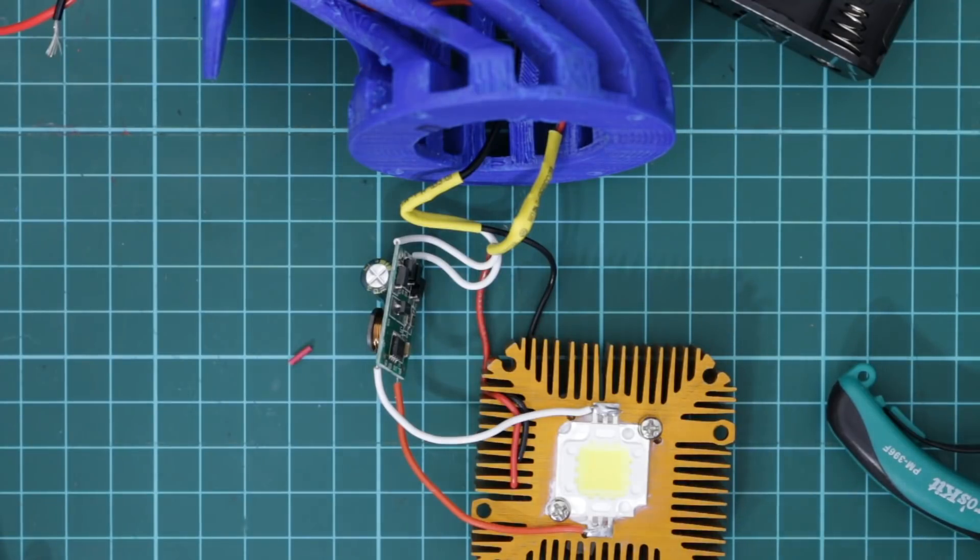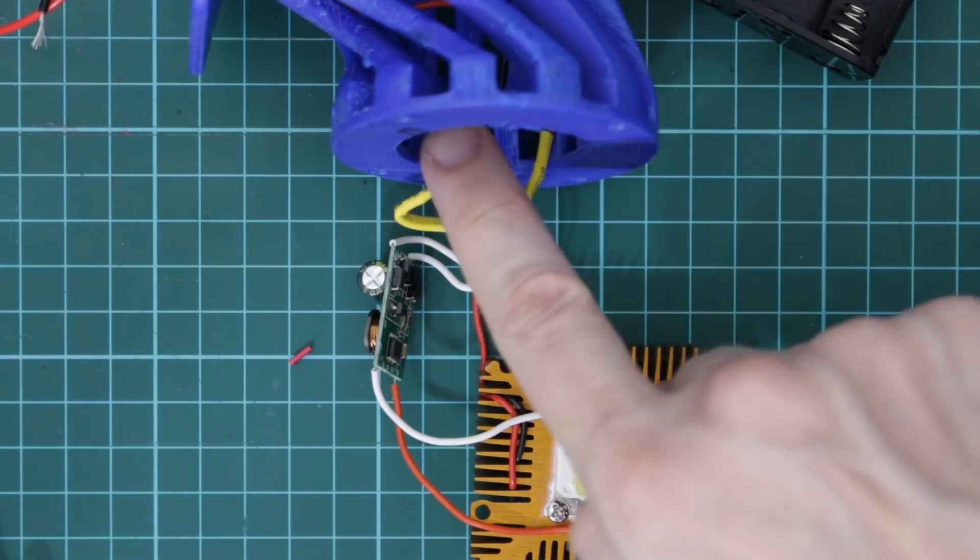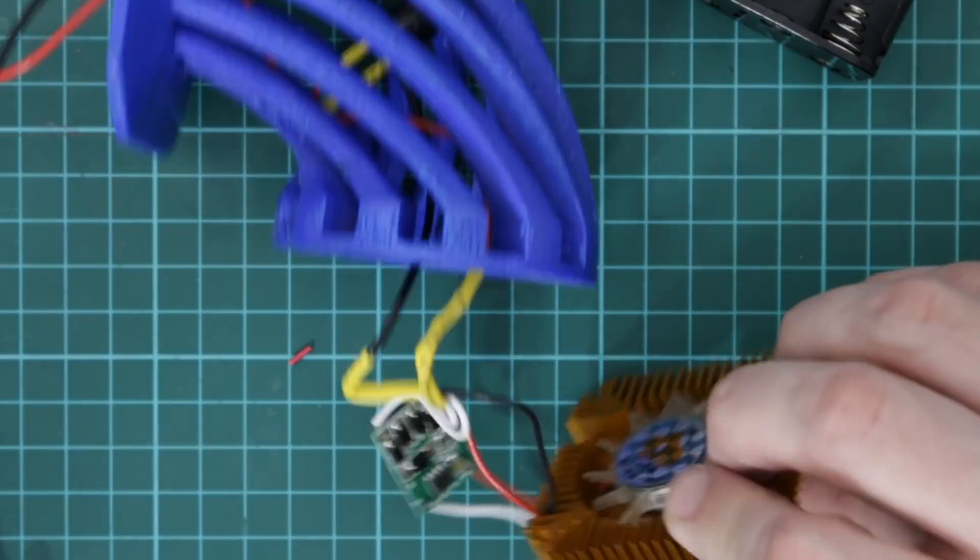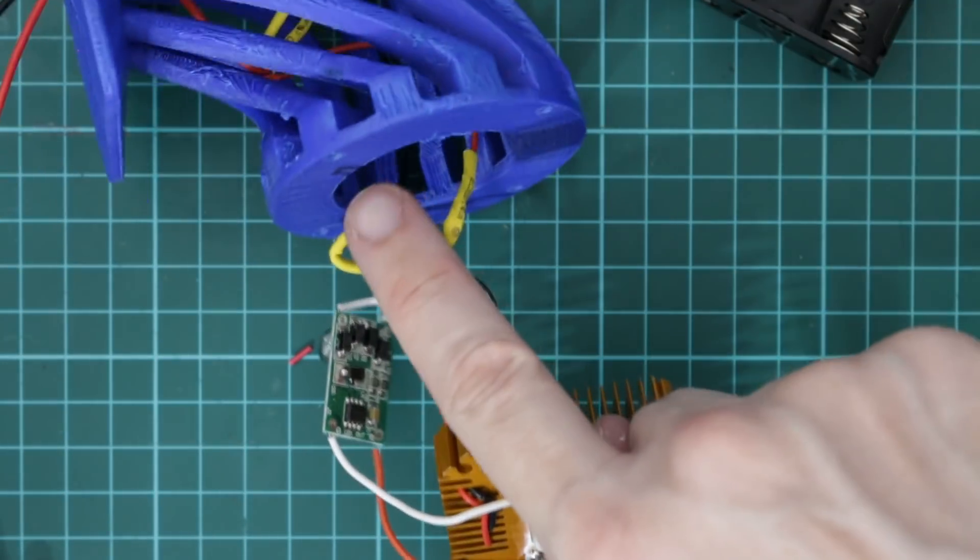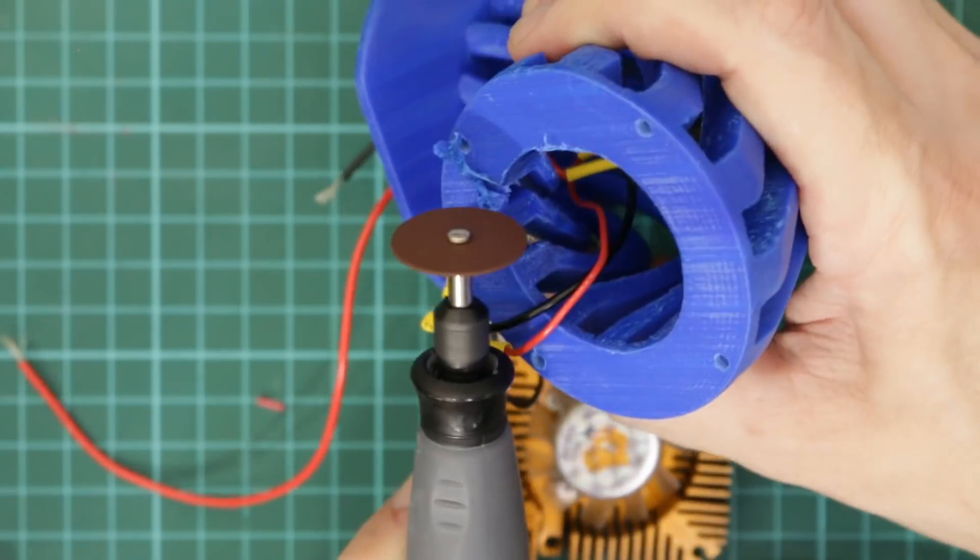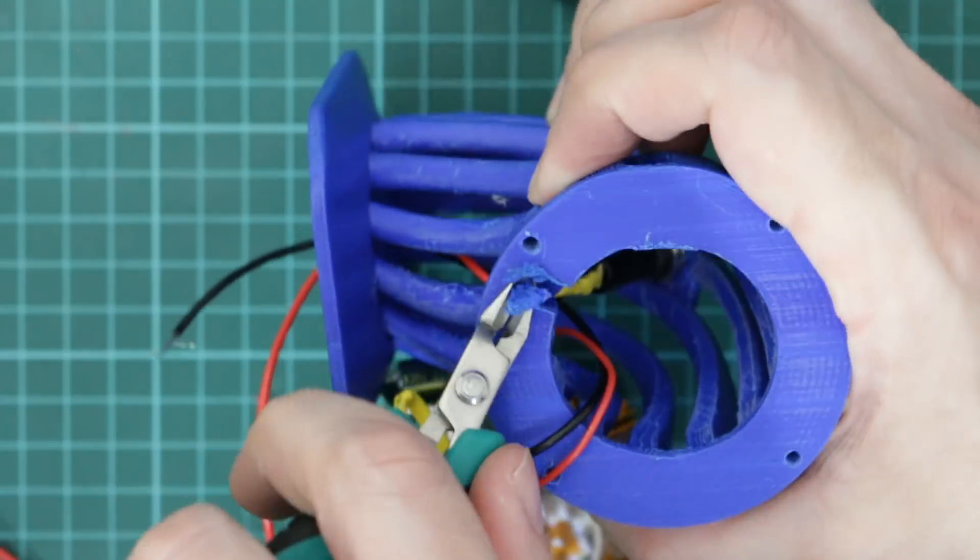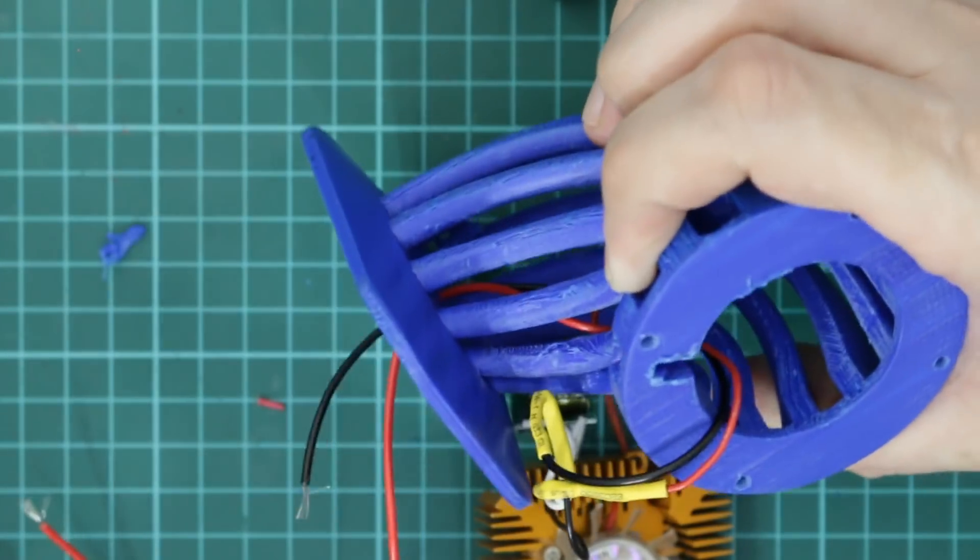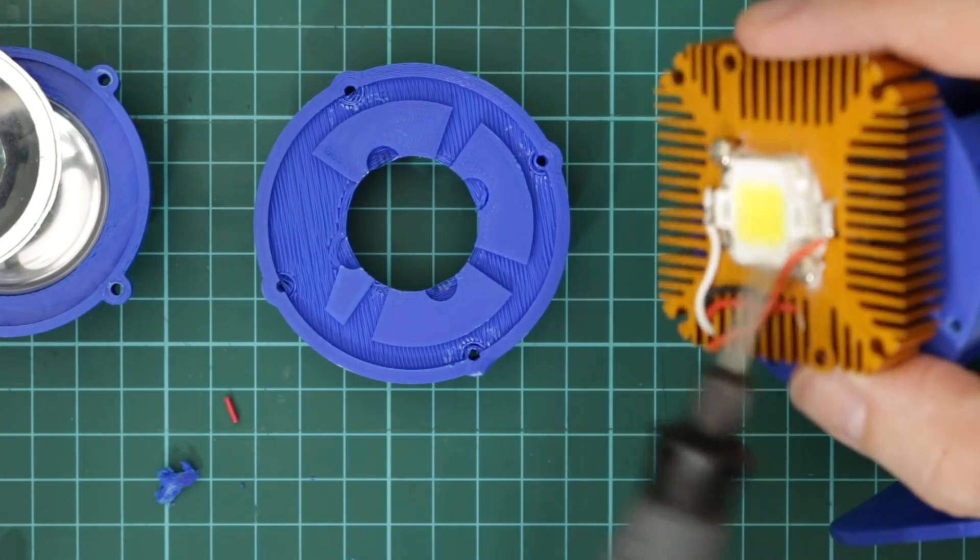One thing I forgot to do was to leave space for the wires on the underside of the heat sink to pass through the circular hole here. That circular hole is just the same size as the fan that's underneath. So I'm just going to cut out a notch there to allow the wires to go through. That should do it. I'm also going to try and make a little bit more space for the screw heads on the LED.